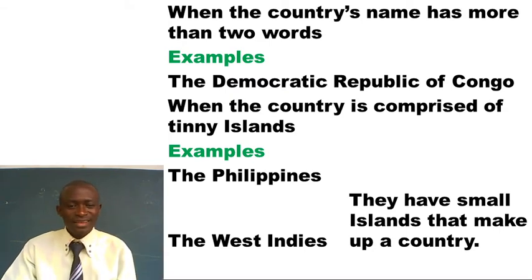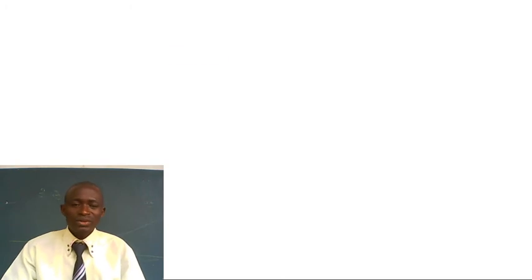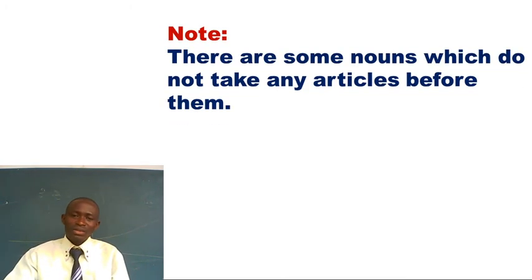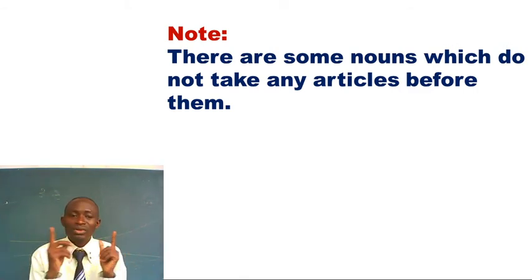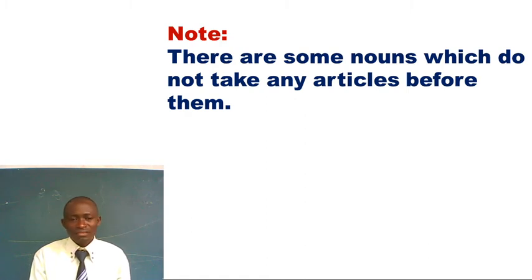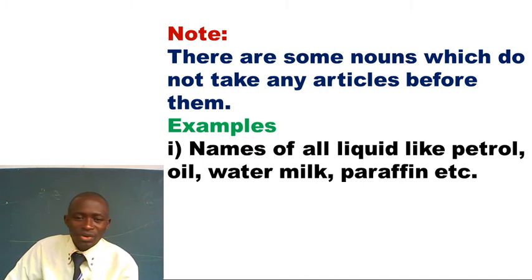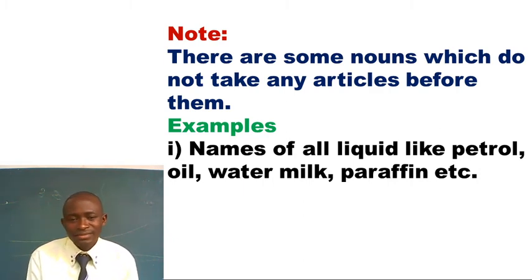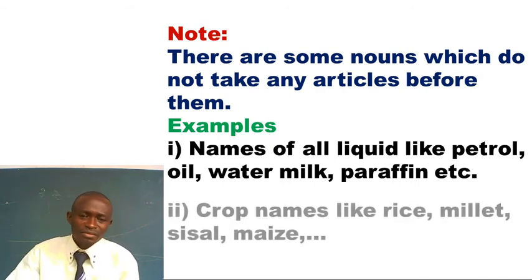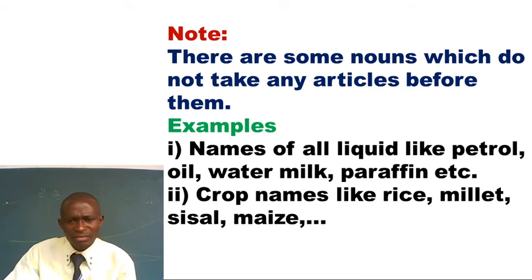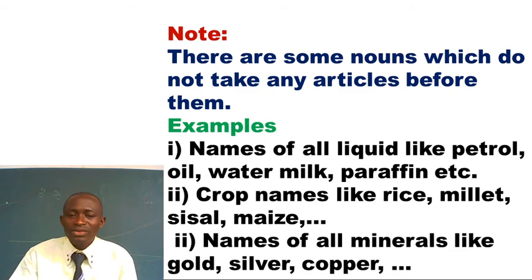As you grow on, you will discover more of these countries, but there are very few. I also want you to know that when talking about nouns, we must recall the principle of using articles. There are some nouns which do not take any articles before them — nouns like names of liquids. All liquids don't take any articles. For example: petrol, oil, water, milk, paraffin — they don't take any articles. We use 'some' instead: 'I need some water.' Crop names like rice, millet, maize also fall in this category and don't take any articles.